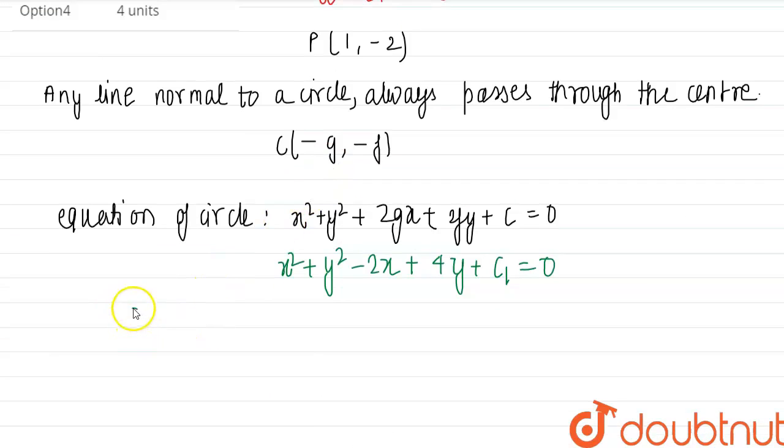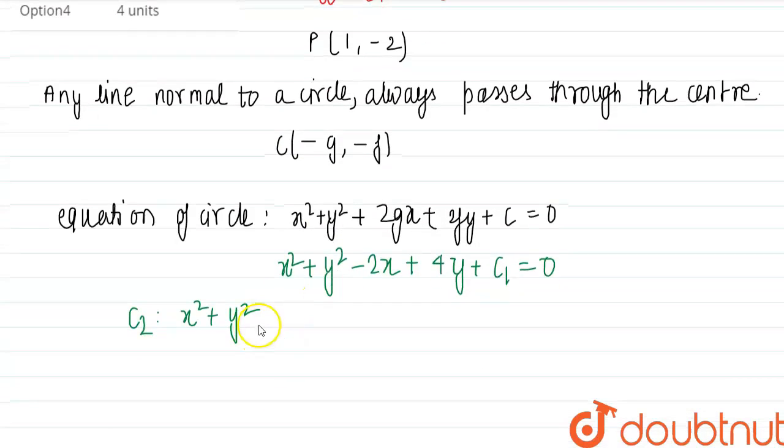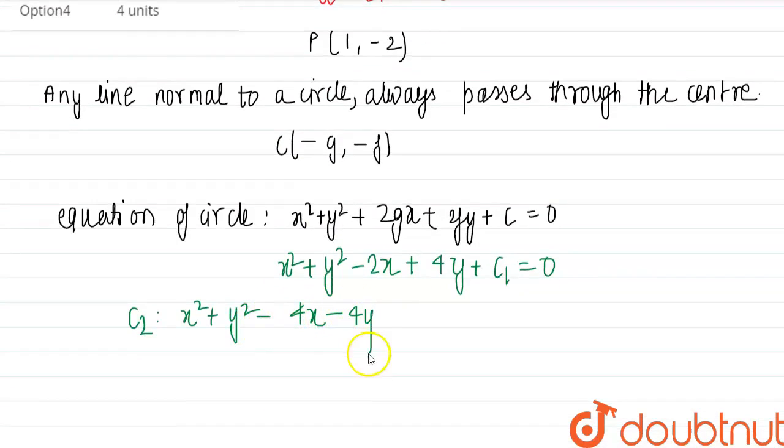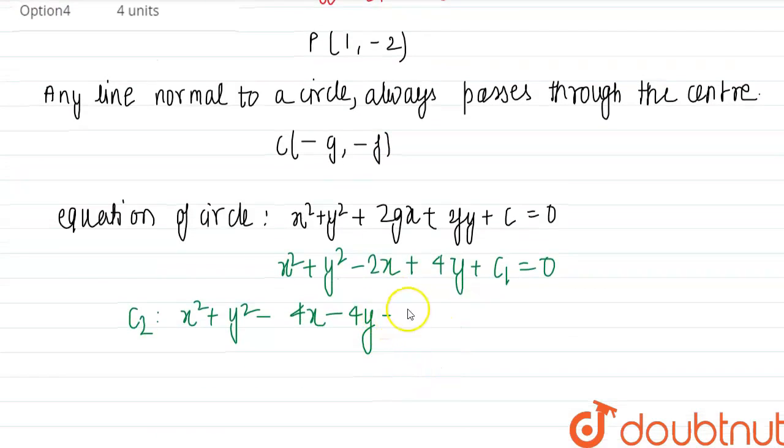Now the equation of the other circle is, we can write that as c2 that is x square plus y square minus 4x minus 4y minus 1 equal to 0.